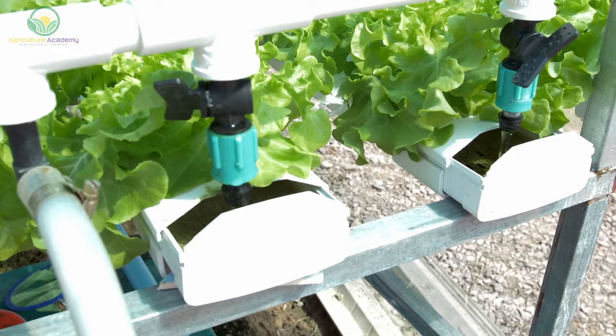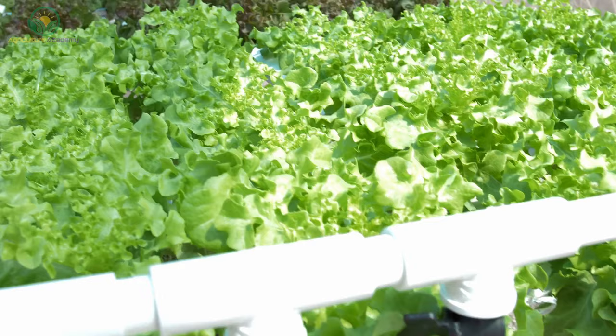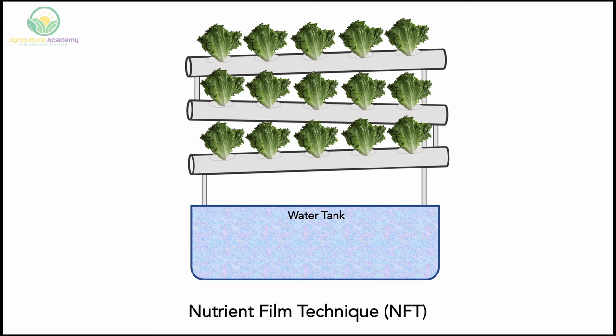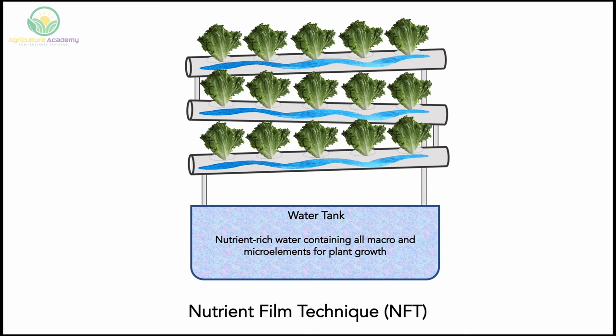In this traditional hydroponic system, the name does most of the explaining. A small stream or film of nutrient-rich water periodically flows over the roots of plants. The nutrient-rich water contains all the necessary macro and micro elements required by the plants for optimum growth. The water flows from the nutrient tank through the plant system and back into the nutrient tank.